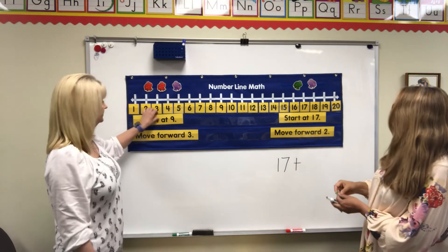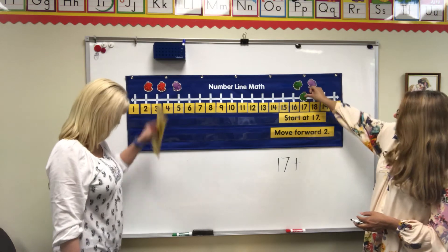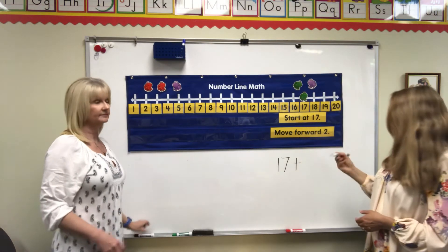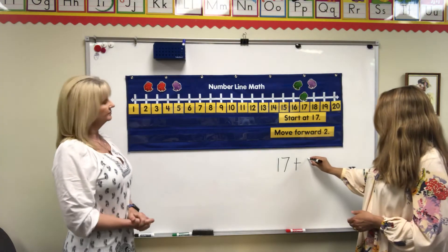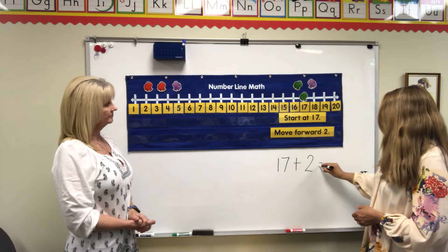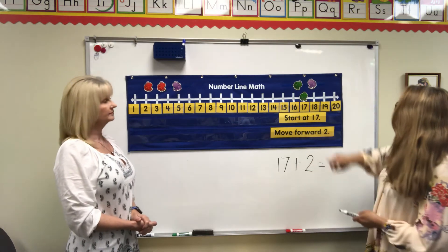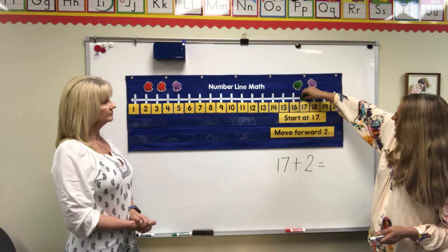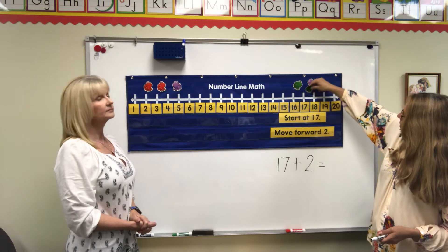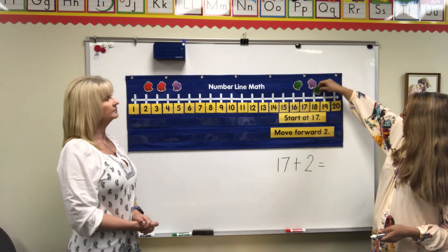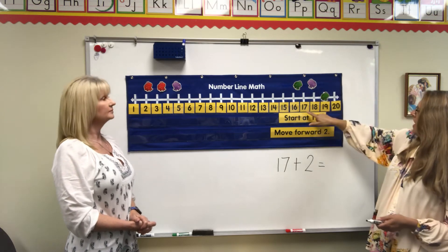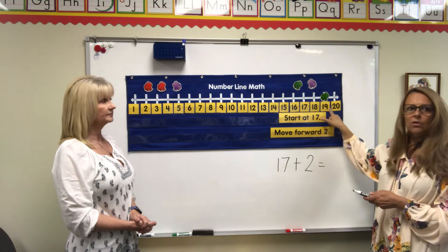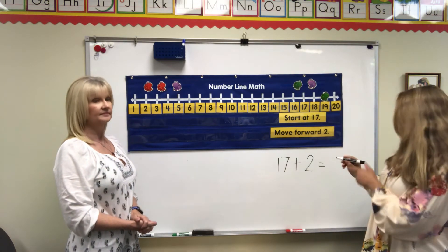Now my frog is going to start at number 17. Let's see what they want me to do — 17, and this says move forward 2. So it's going to be 17 plus 2. I'll take my frog, start at 17, and go 1, 2. So 17 plus 2 equals 19!